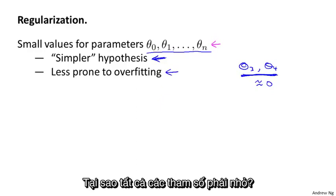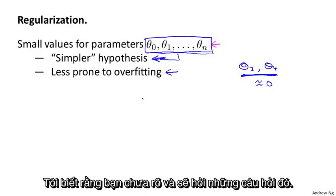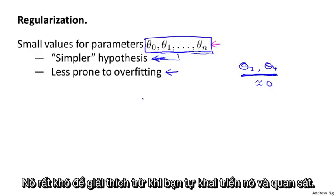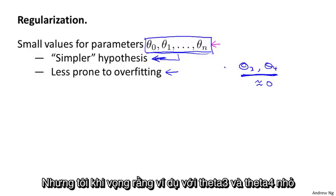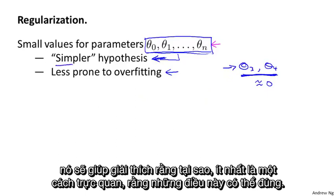I realize that the reasoning for why having all the parameters be small, why that corresponds to a simpler hypothesis, I realize that reasoning may not be entirely clear to you right now. And it is kind of hard to explain unless you implement it yourself and see it for yourself. But I hope that the example of having theta 3 and theta 4 be small, and how that gave us a simpler hypothesis, I hope that helps explain why, at least give some intuition as to why this might be true.